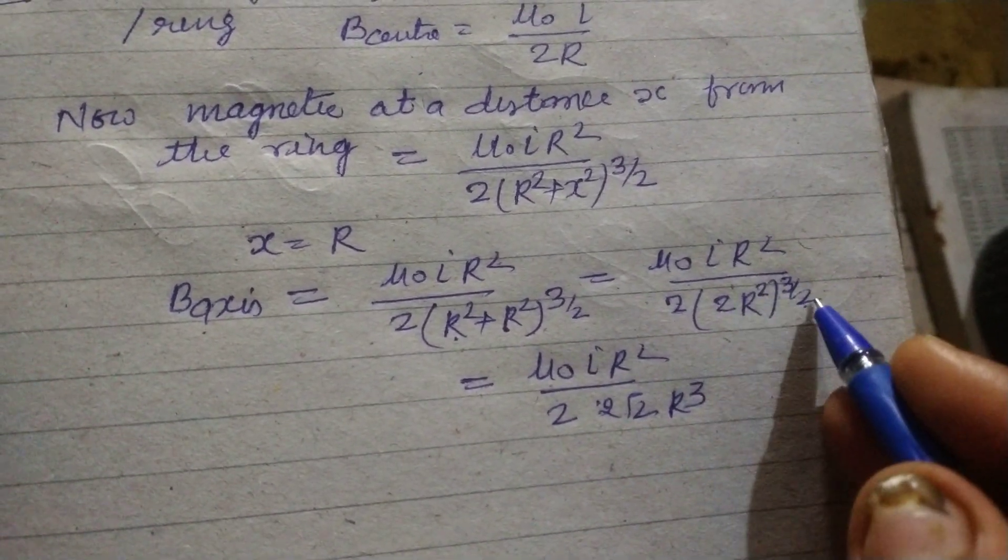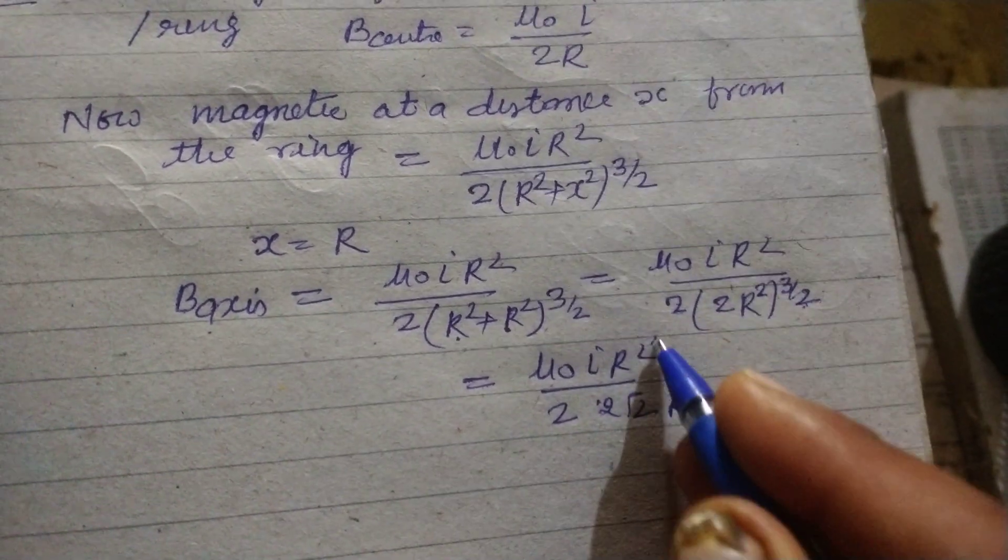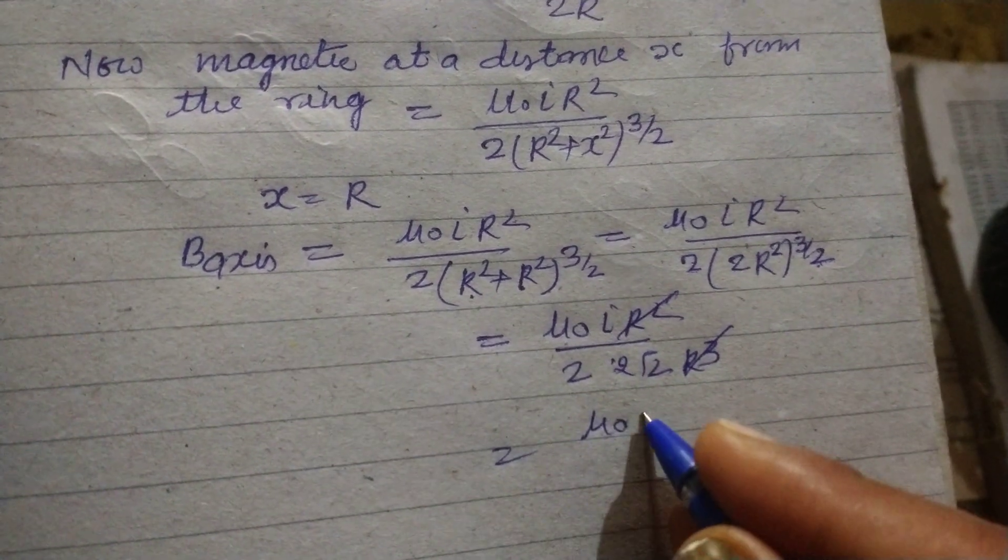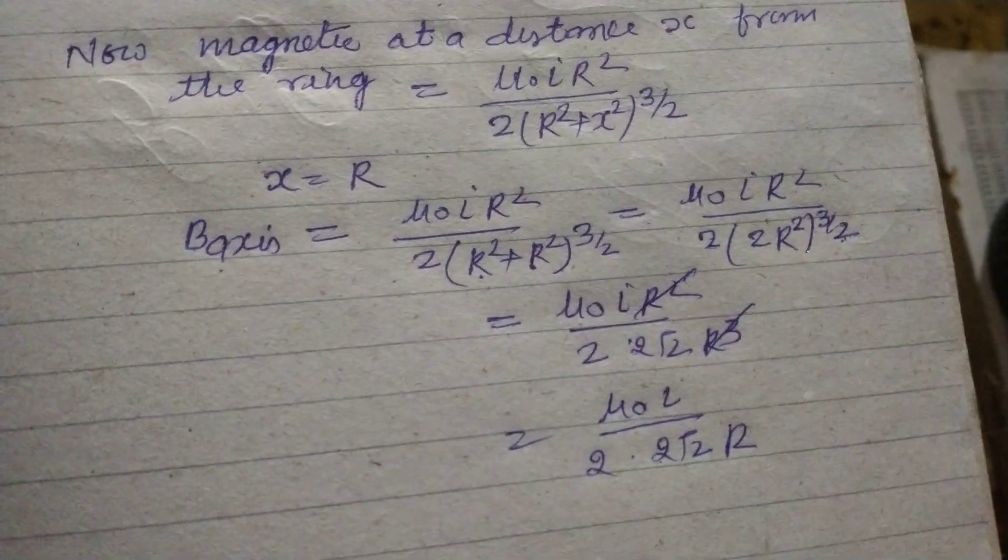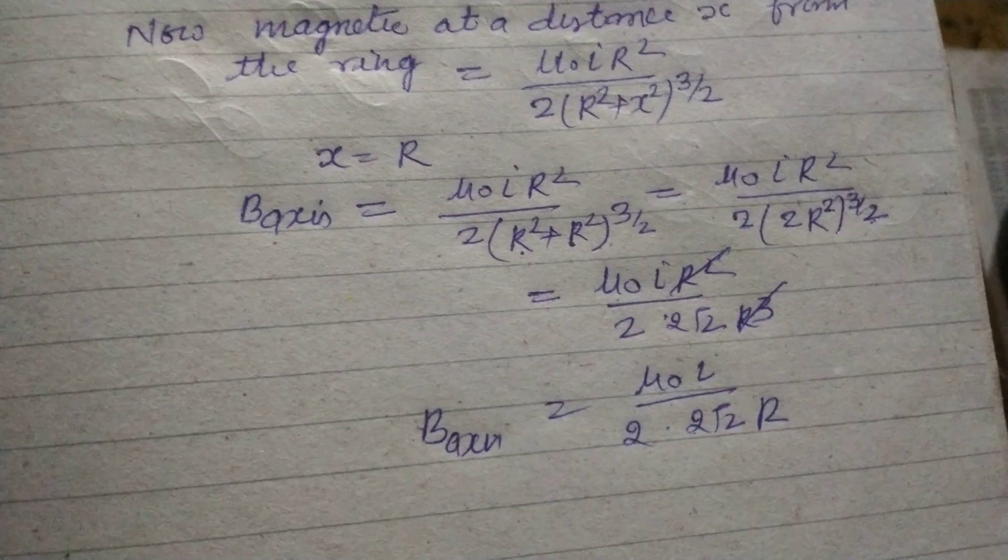So this square is removed from 1 by 2 and R cube, so this is R. This is the magnetic field at axis of the coil.